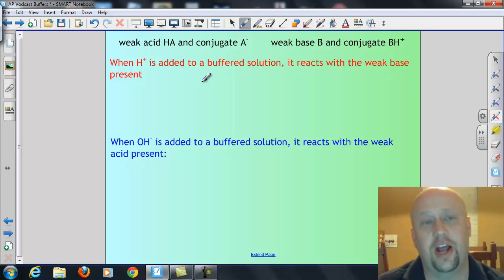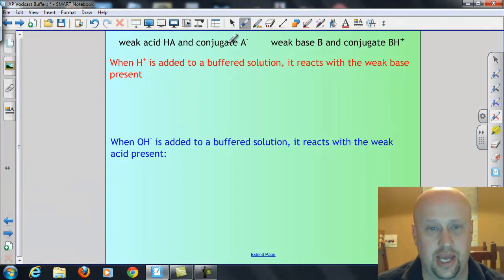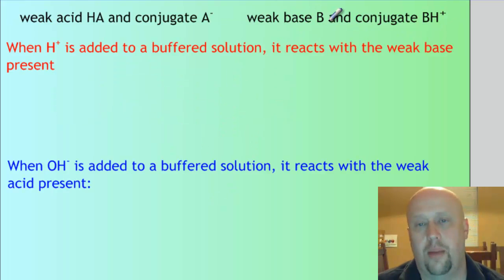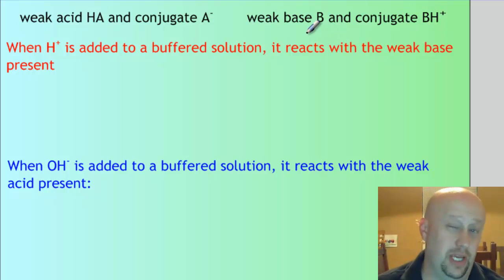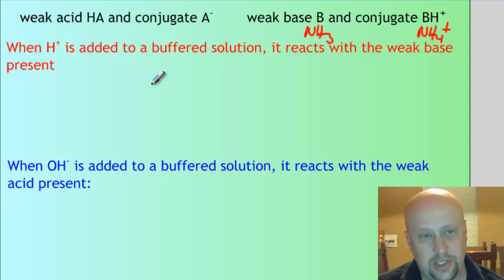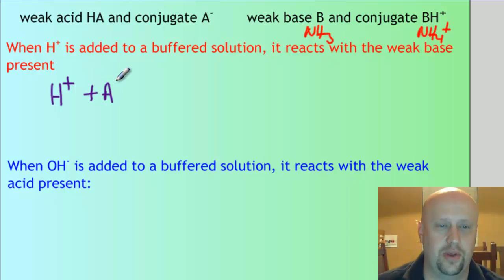What gets hard is when you've got a buffer and then you add something to it. What's important first is to remember what the actual equations are. You've got the weak acid HA and its conjugate A⁻. If you add H⁺, it always reacts with the weak base — so H⁺ plus A⁻ gives us HA. There's also the weak base B and its conjugate BH⁺. For example, NH₃ and its conjugate would be NH₄⁺.